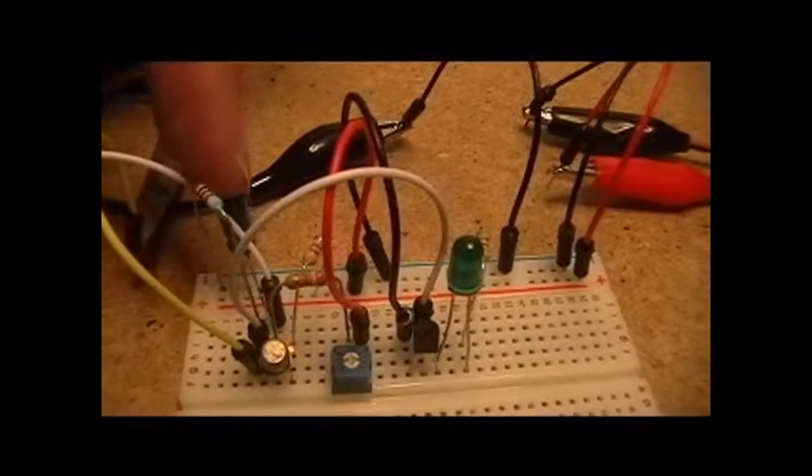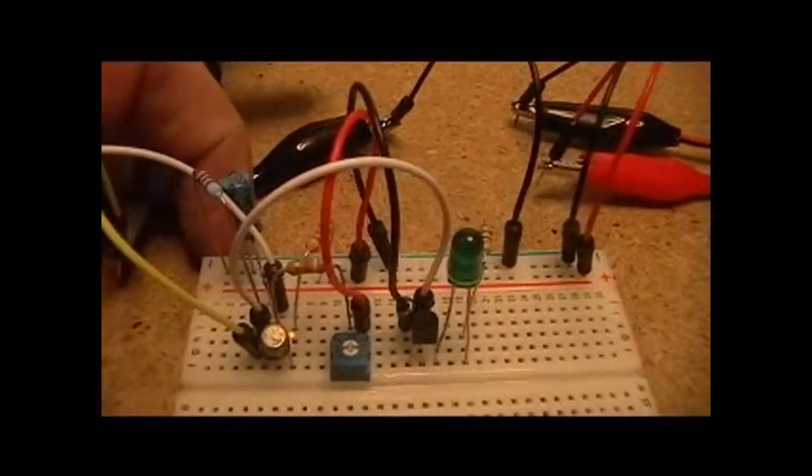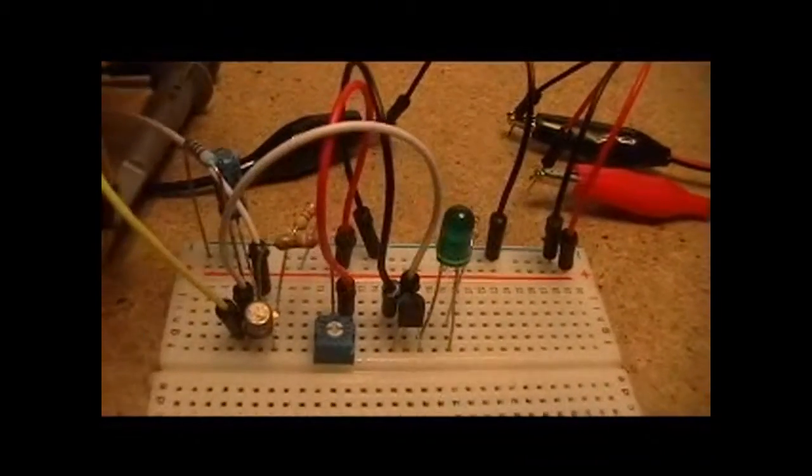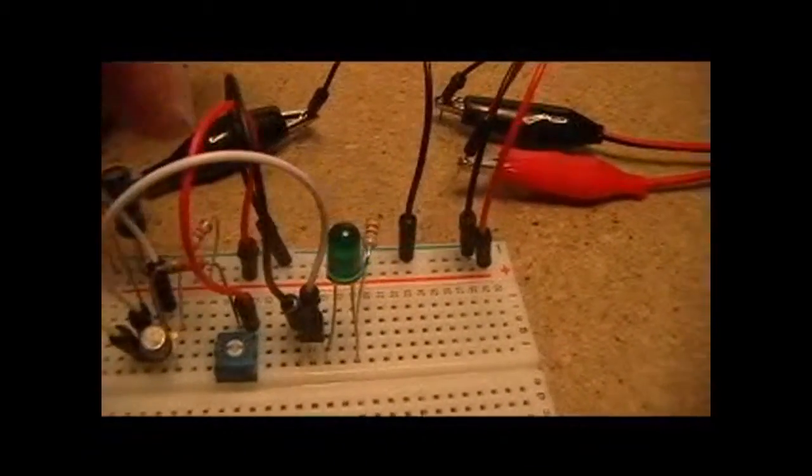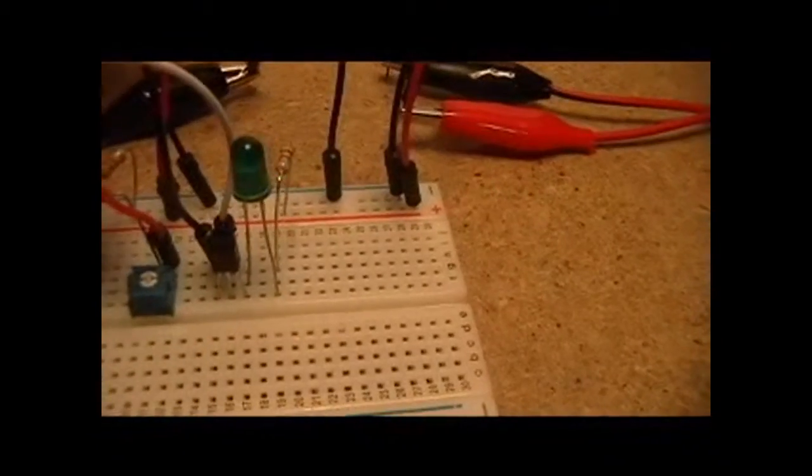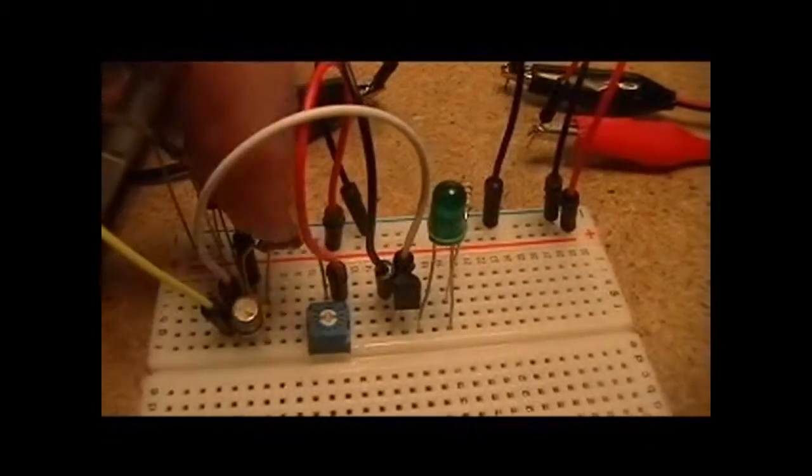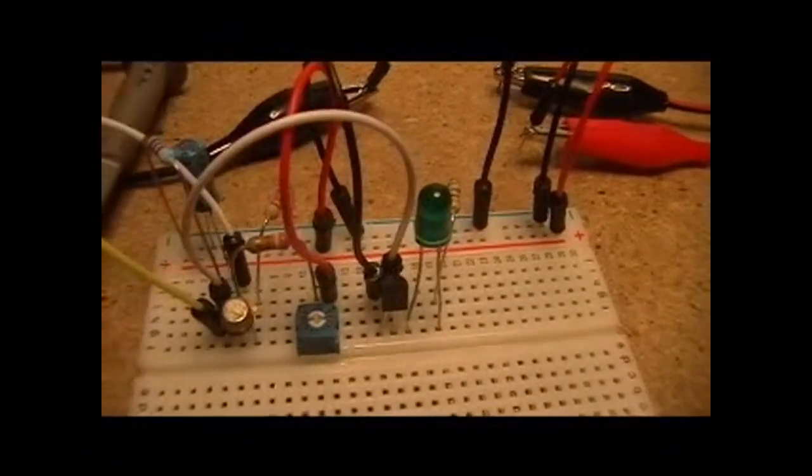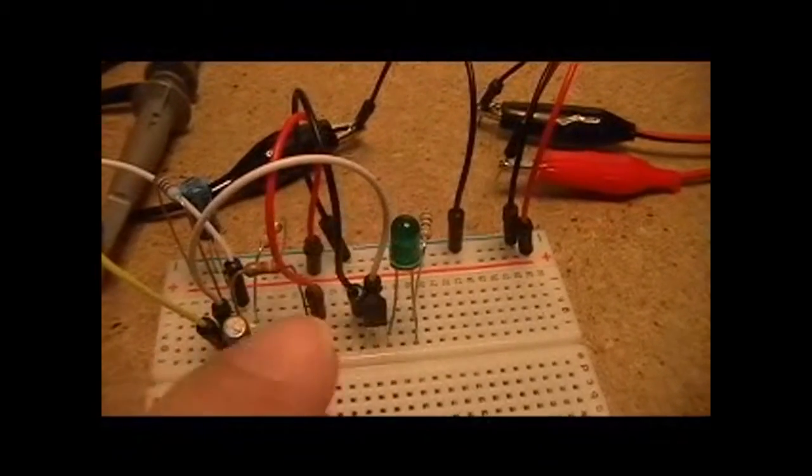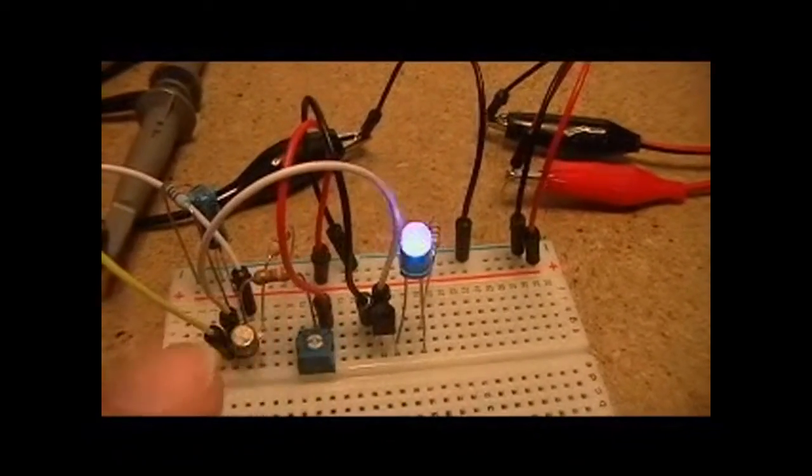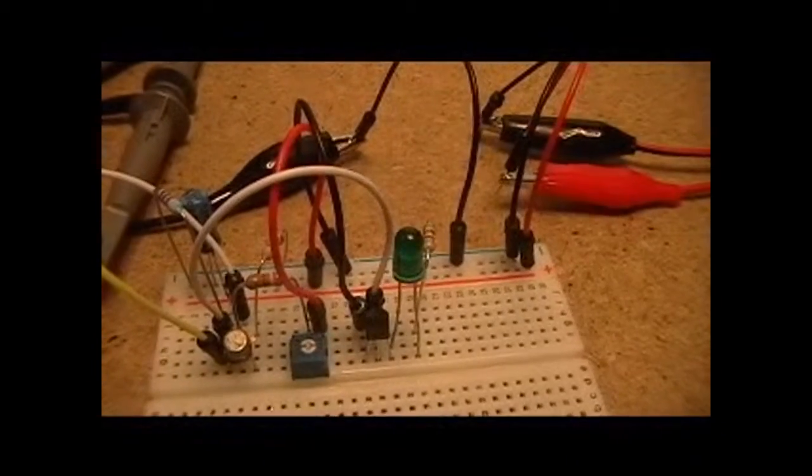We've got a 10 microfarad capacitor back here that's what's being charged. And you'll see that the other side of it here, there's a 3.9K ohm resistor and then our pot going up to positive voltage. So basically that's the process for charging it.